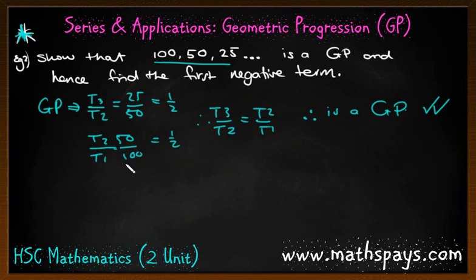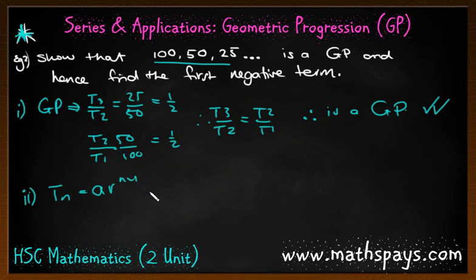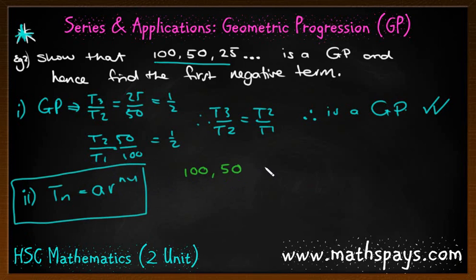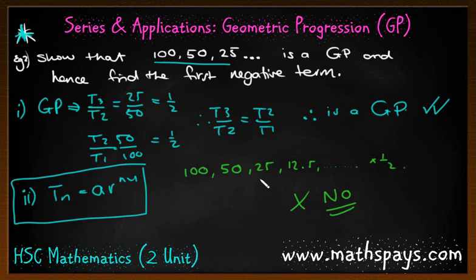You can see why we need to know that recursion concept — so that we can prove this is a GP. Remember, if we're not told that this is a GP, we can't go and use the rule to find the number of terms. Now, for the second part — finding the first negative term — think about this in reality as a pattern: 100, 50, 25, 12.5. What's going to happen each time we halve this number? Is it ever going to become negative? The answer is no — no matter what we do, if we halve the number there is no possible way to get a negative answer. We know it's getting smaller and smaller, closer to zero, but it will never go below zero.